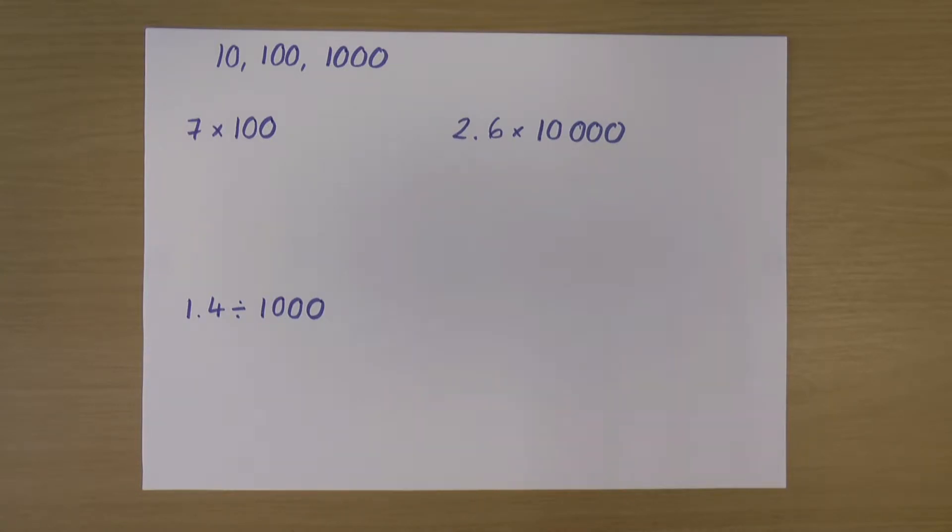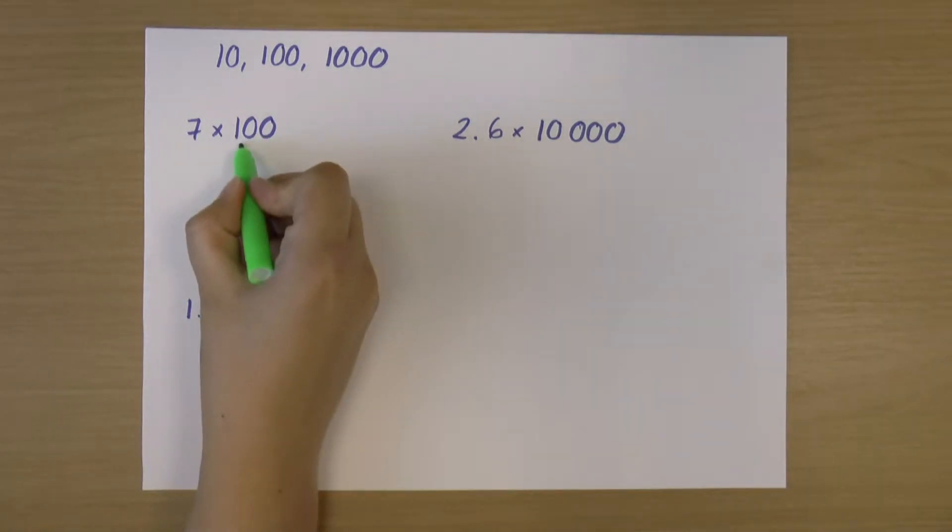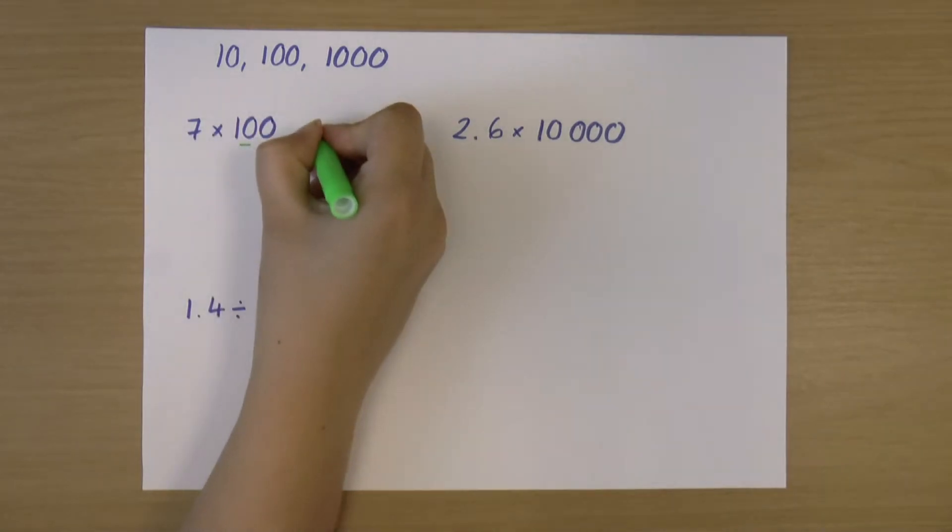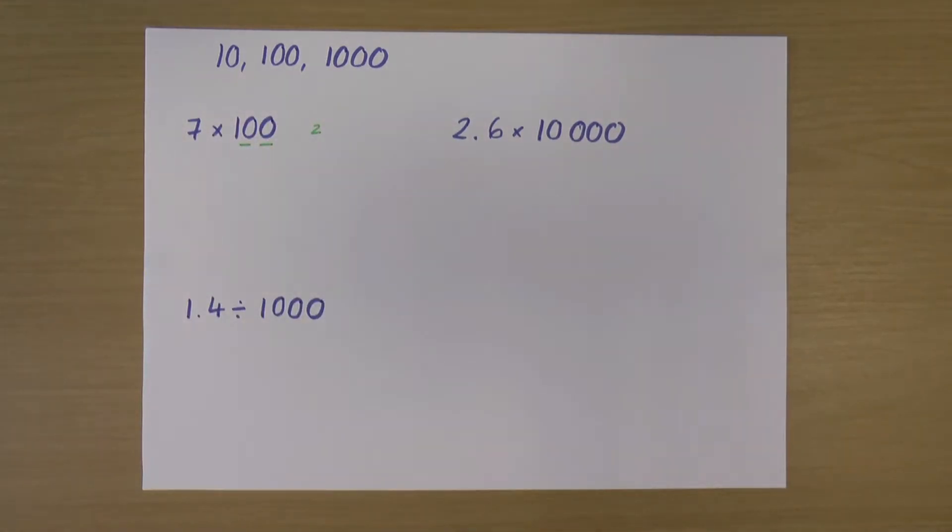With all of these multiplying or dividing by multiples of 10, the first thing I'm going to do is count the number of 0s in what I'm multiplying by. So I'm going to count the 0s in 100. There are two 0s. I'm going to put a little 2 there, just to remind me.